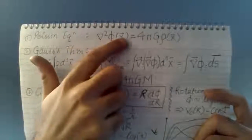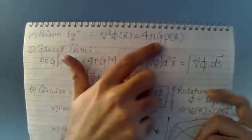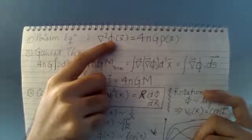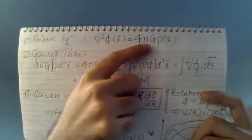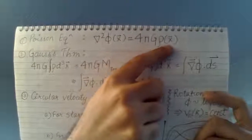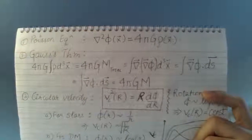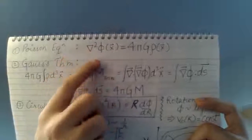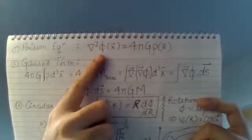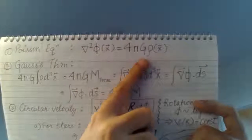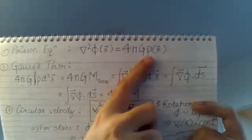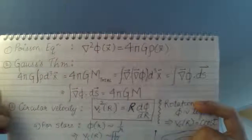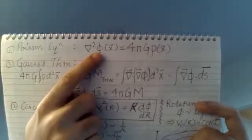So the Poisson equation is: ∇²Φ(x) = 4πGρ(x), which is basically the double spatial derivative of the potential of a given system equals 4πG times the mass distribution density at that point. So if you know the potential of any system, you take a double spatial derivative and you can find the mass distribution, or vice versa. If you know the density, you integrate it to get the potential back.